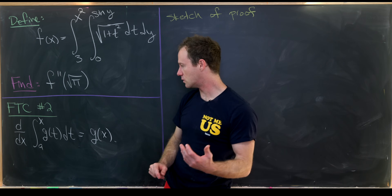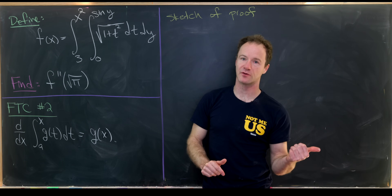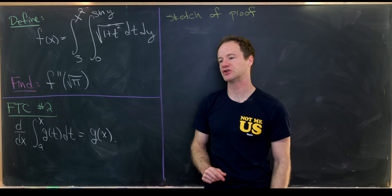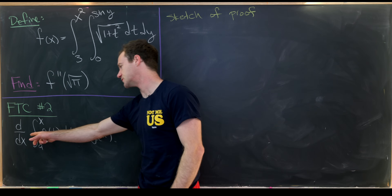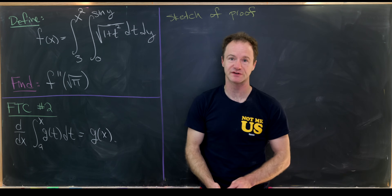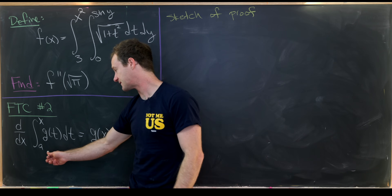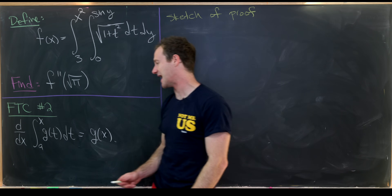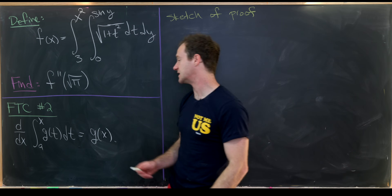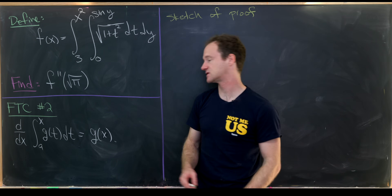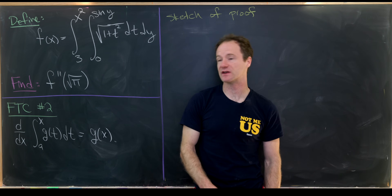Our main tools will be the Fundamental Theorem of Calculus Part 2, along with the product rule and the chain rule. FTC Part 2 says that if you take the derivative with respect to x of the function defined as the integral from a to x of g(t) dt, then you simply get g evaluated at x — that is, g evaluated at that upper limit of integration.